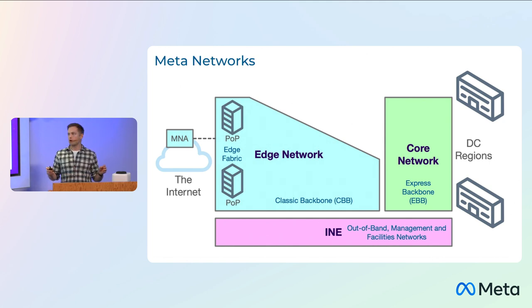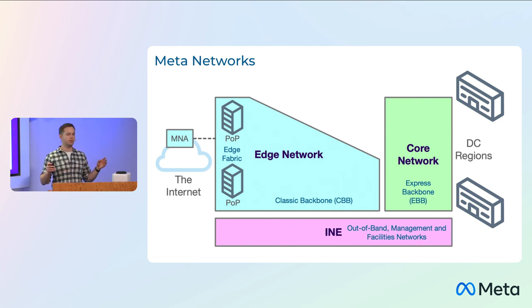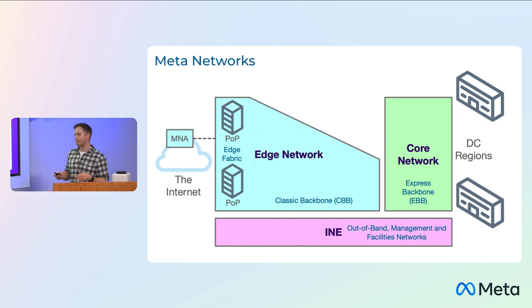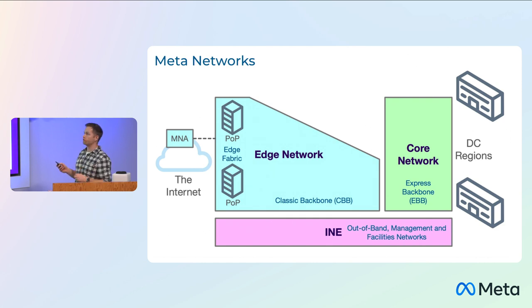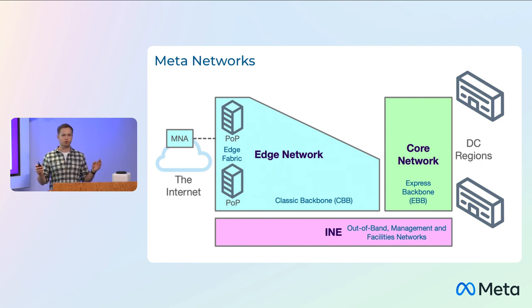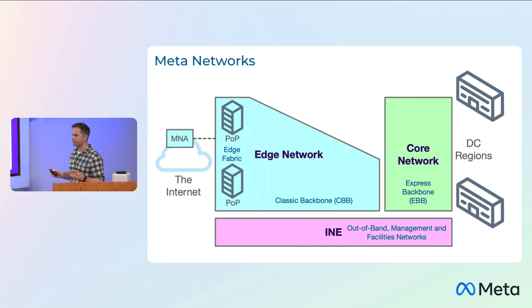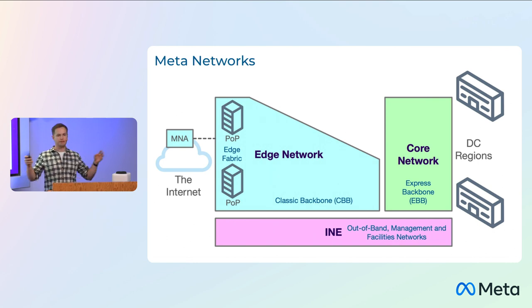So in terms of the networks we run, we've essentially got four main networks. First I'll talk about is the data center networks. If you think about these large data centers we have deployed around the world, these are full of thousands and thousands of racks, all interconnected with a big internal network. Next is the core network. We actually run two core networks. The first is EBB, our express backbone, which is the network that interconnects all of these data centers together. This network is about very high volume traffic, mostly machine to machine between RDCs, and it's almost entirely internal traffic — this never sees the internet.